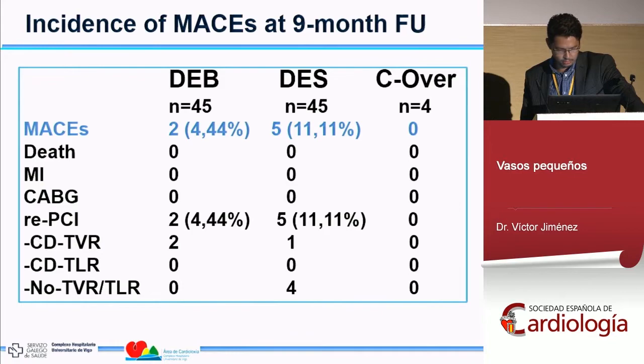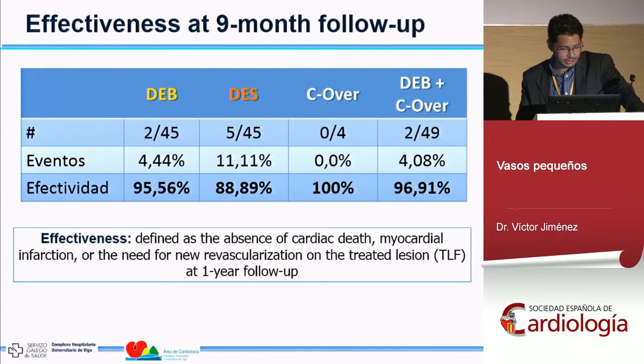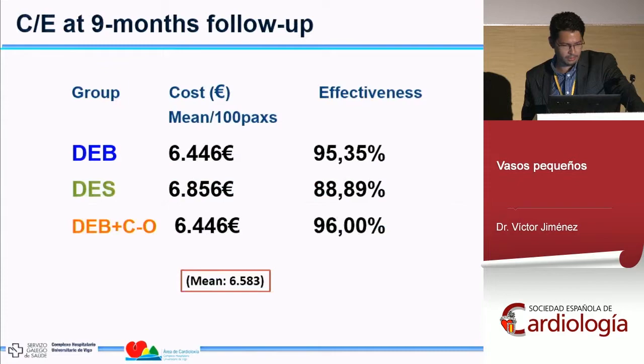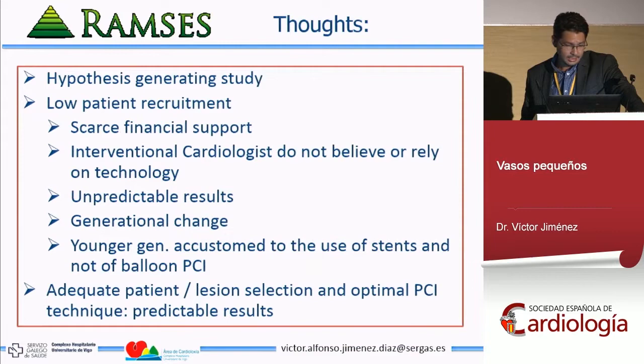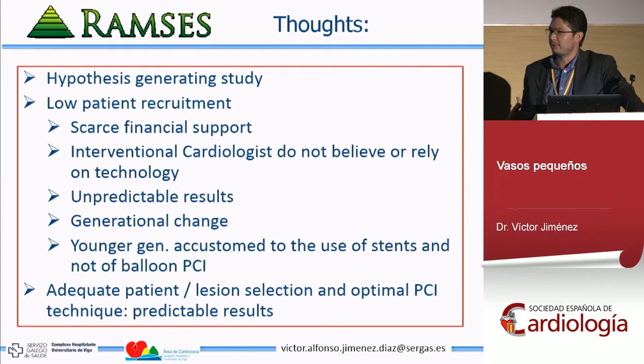The cost-effectiveness analysis at 9 months shows that the drug-eluting balloon is very cost-effective compared to the other groups, with a mean expenditure of approximately 6,500 euros per patient. These are preliminary data — we need to wait for the final one-year data. We found it difficult to include patients because we all want a perfect result with balloons compared to stents, but the patient outcomes may be similar at 9 months. That is all — thank you very much.